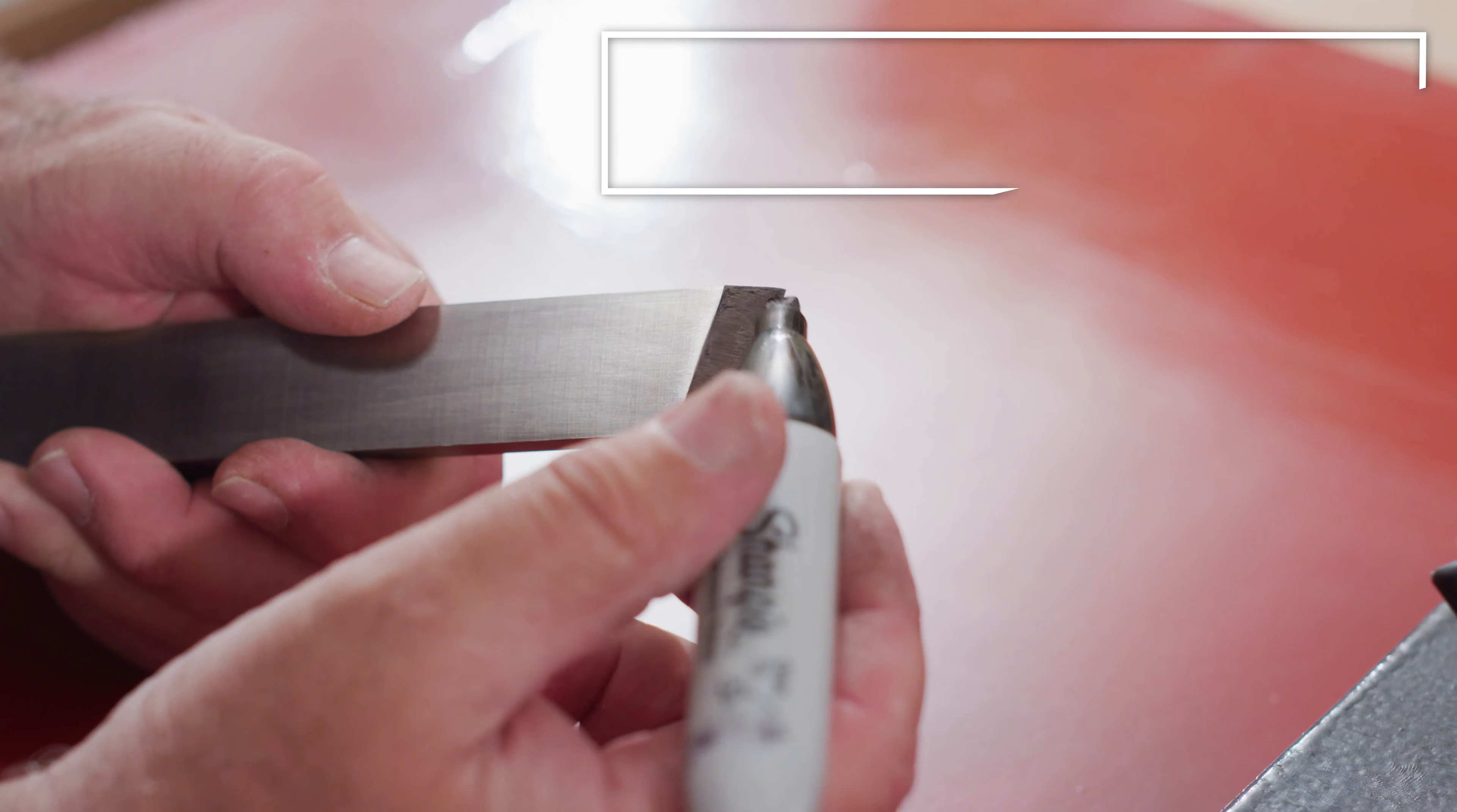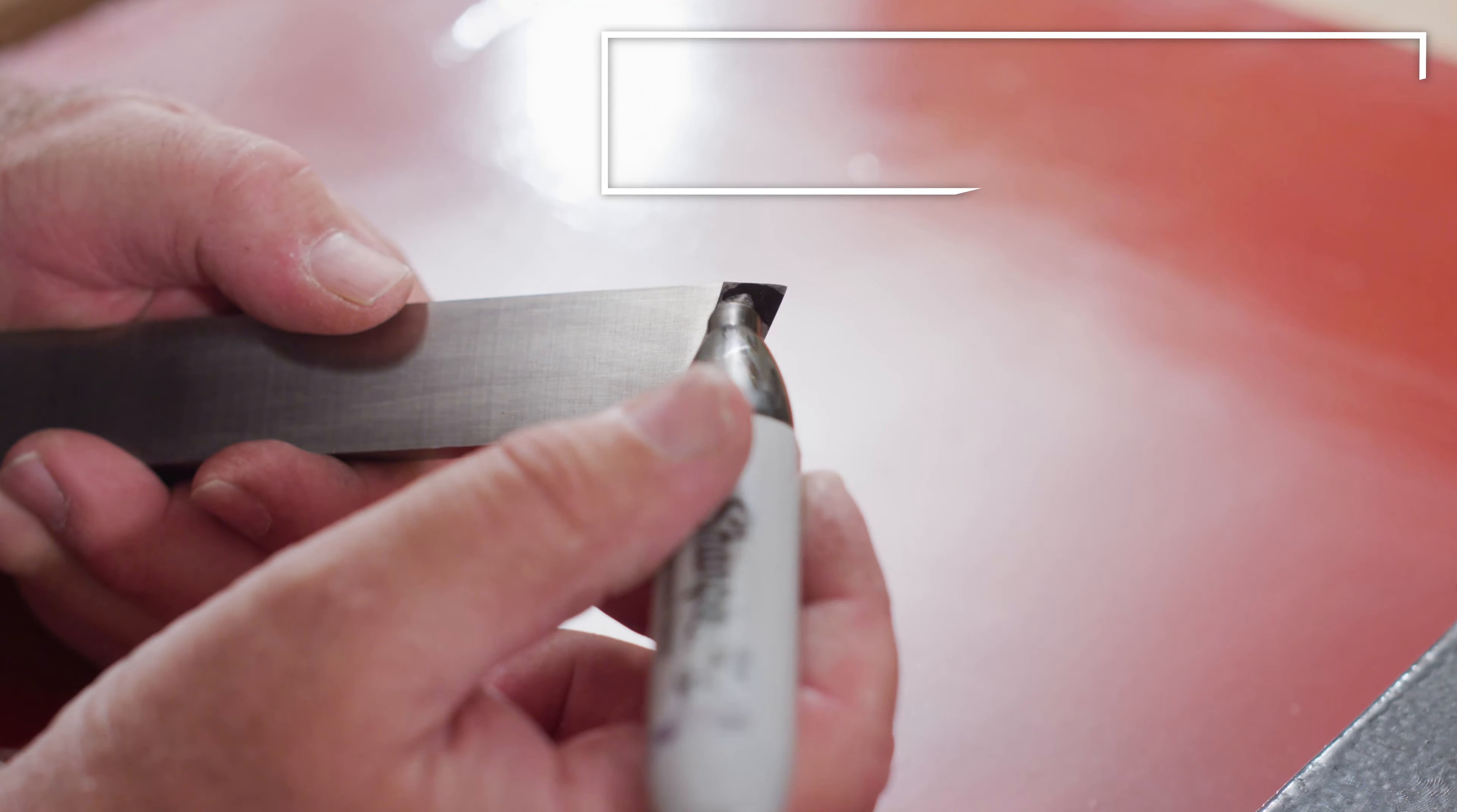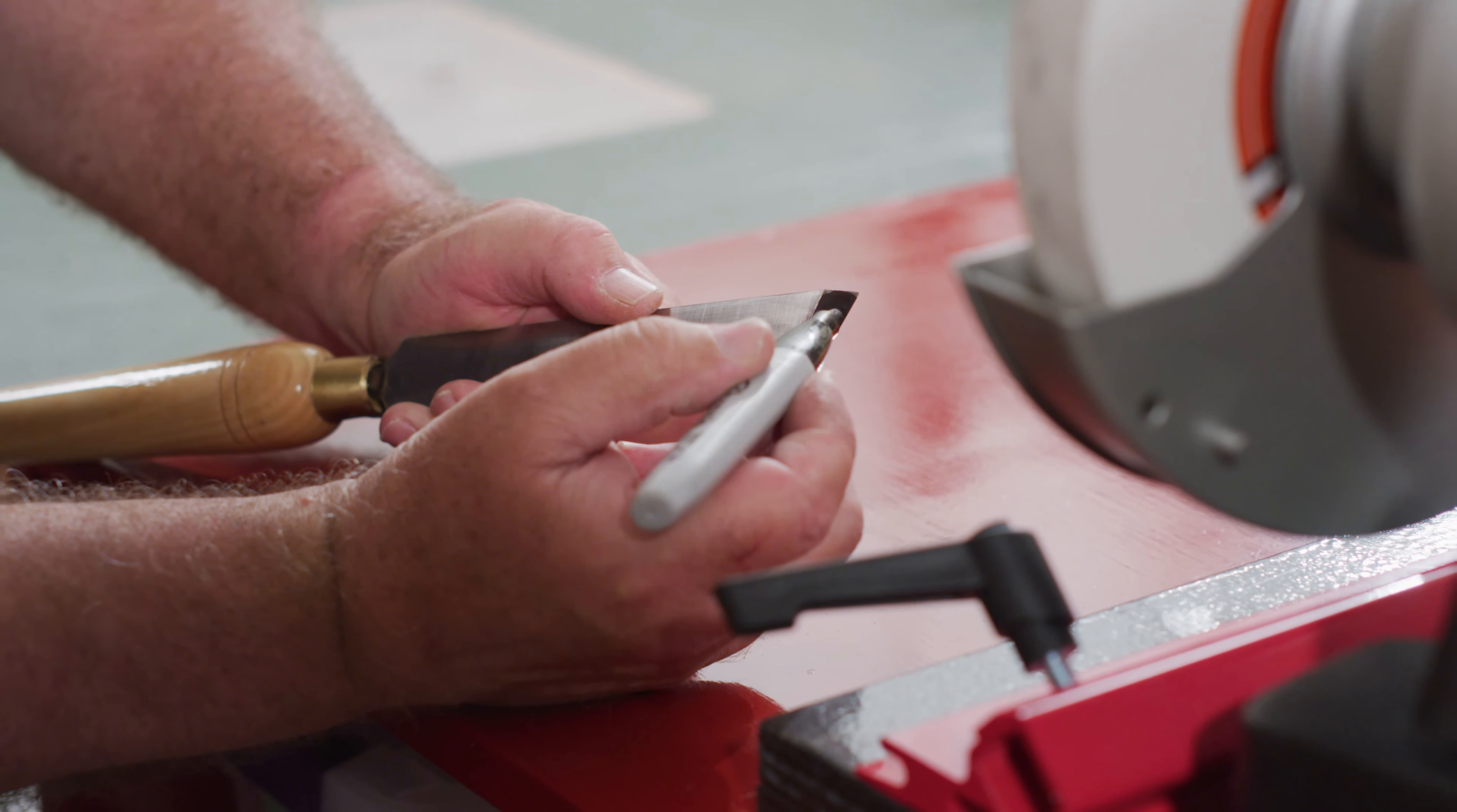If you're new to sharpening a skew, use a black marker to color both cutting surfaces of the skew. This will come in handy when correctly positioning the skew to the grinding wheel.